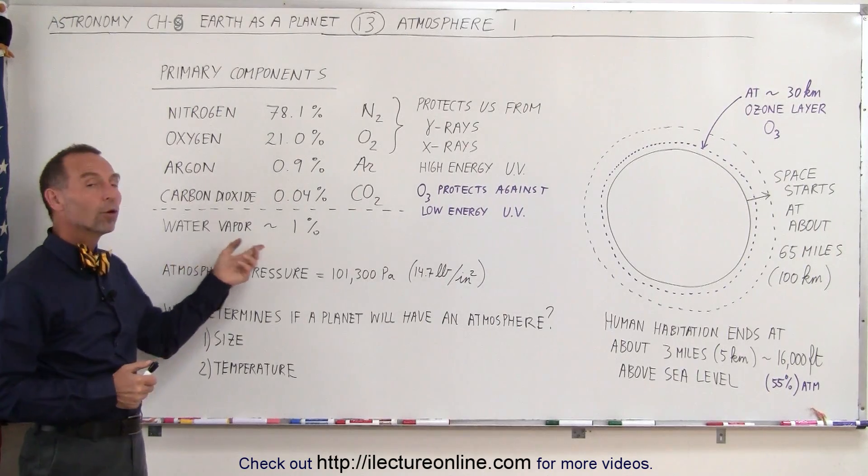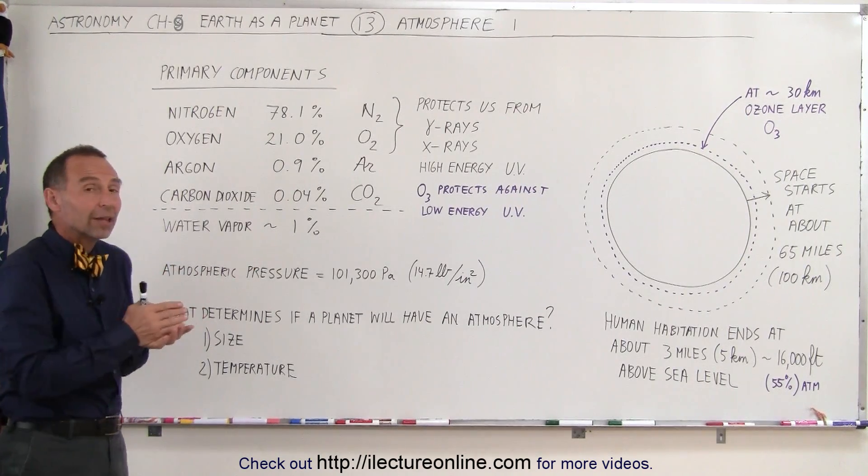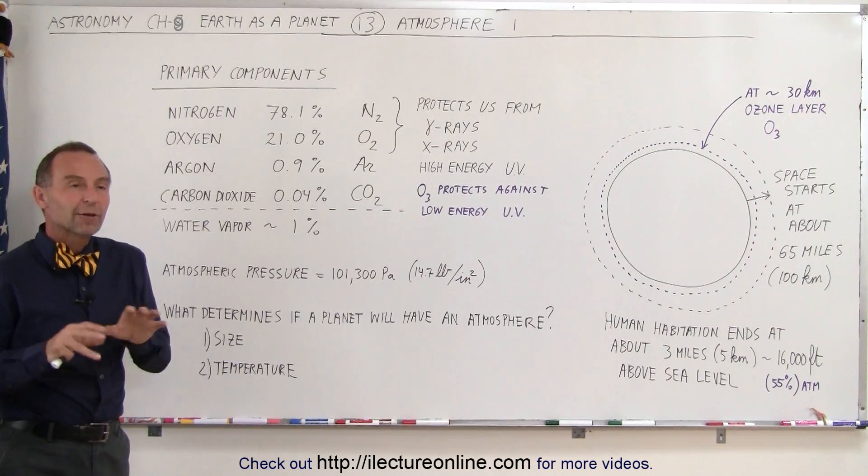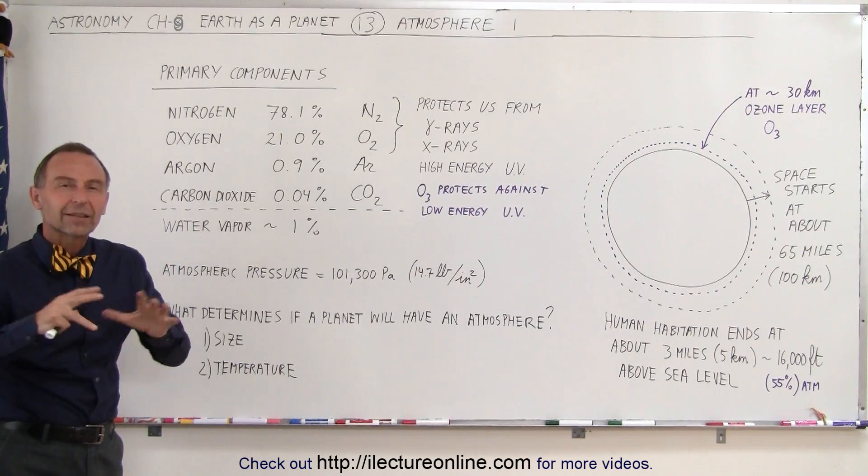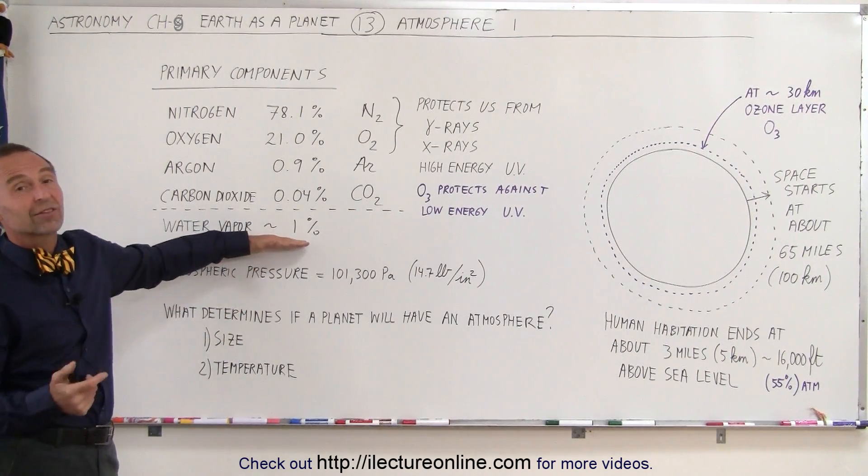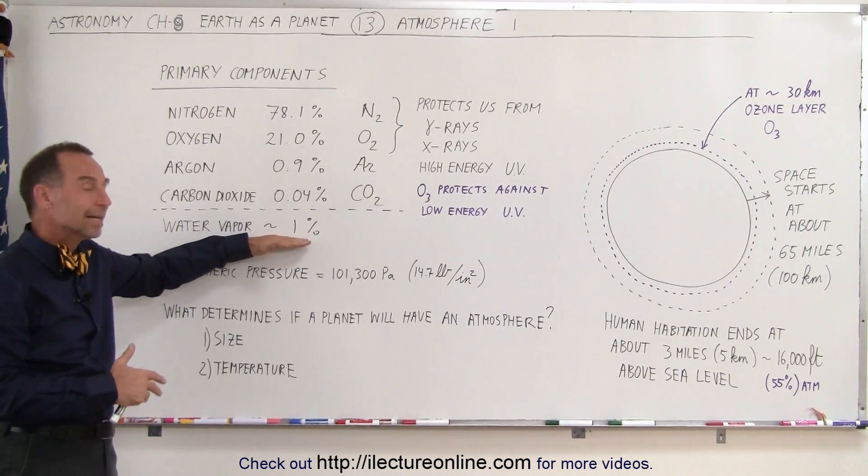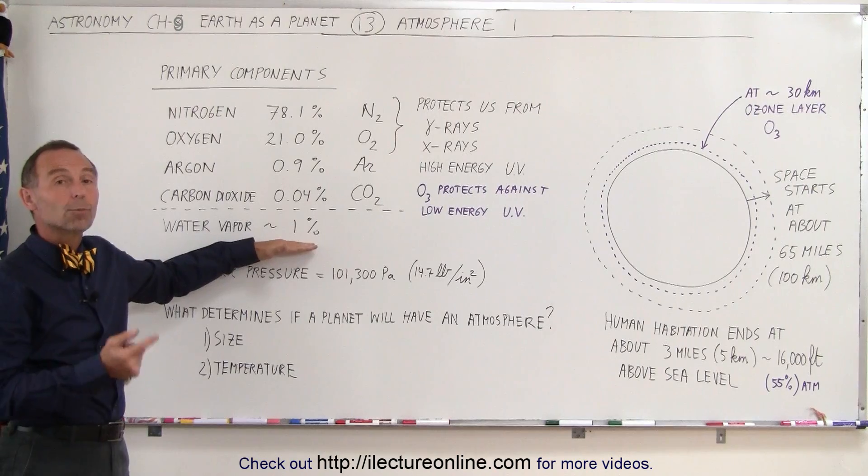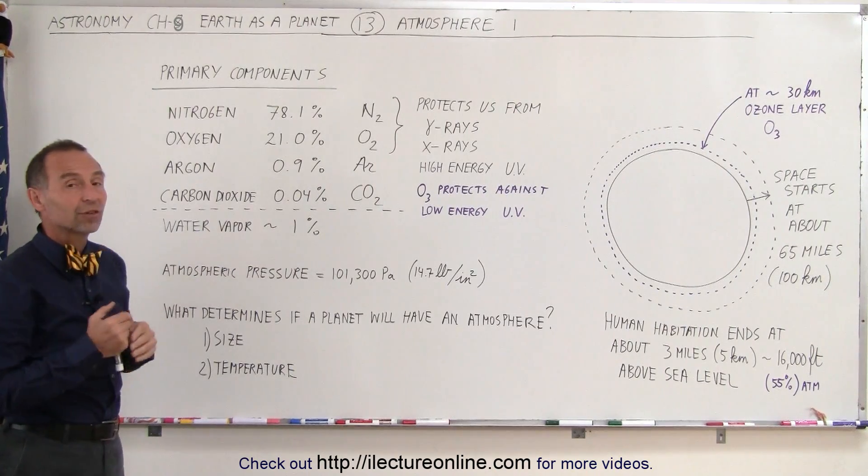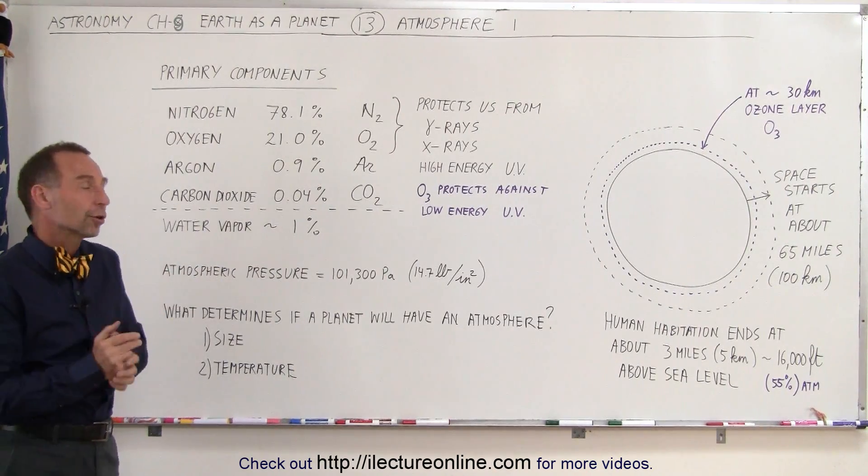Water vapor also can be found in the atmosphere, but the amount varies a lot with where on the Earth you are. If you're in a dry climate, like in a desert environment, it is much less than 1%. If you go into regions, like above the oceans and near tropical regions, it can be a lot more than 1%. So the amount of water vapor in the atmosphere does depend upon location on the Earth.